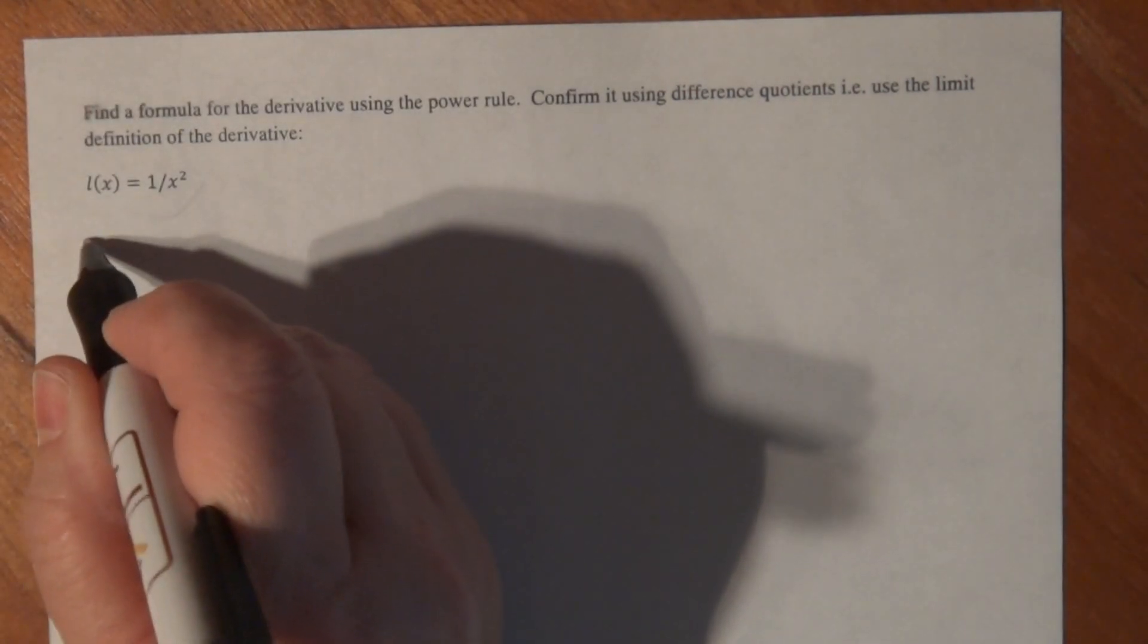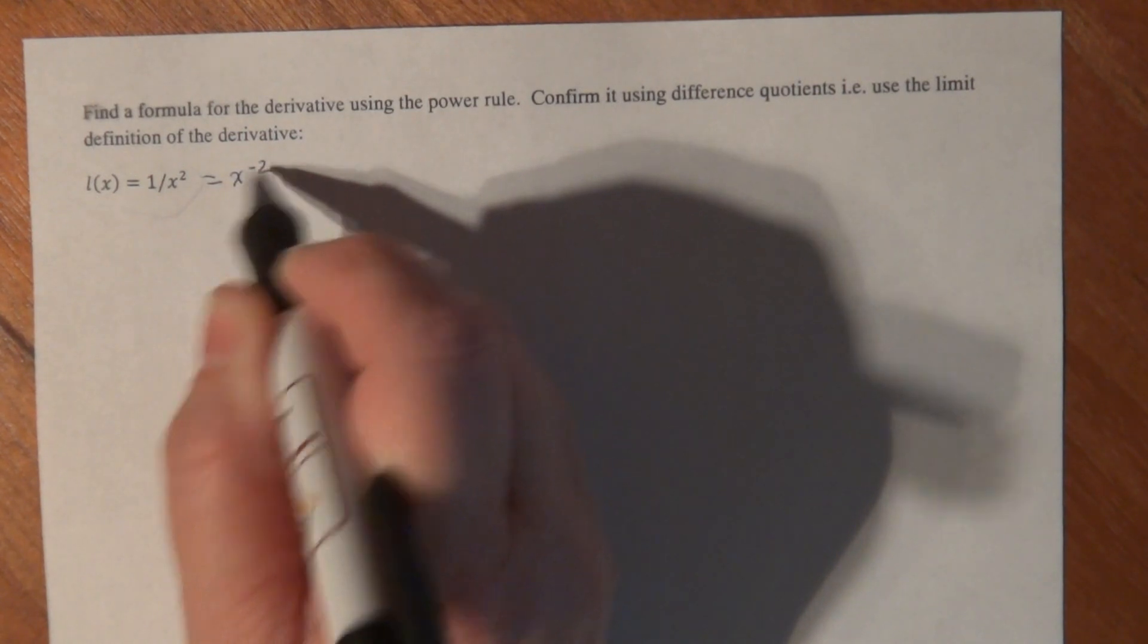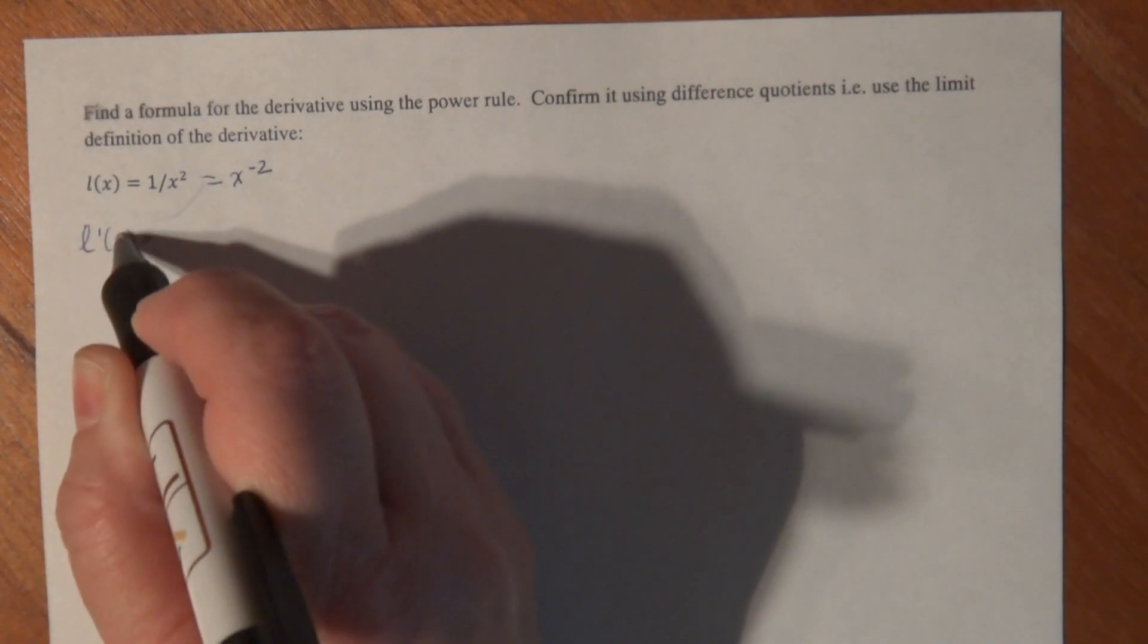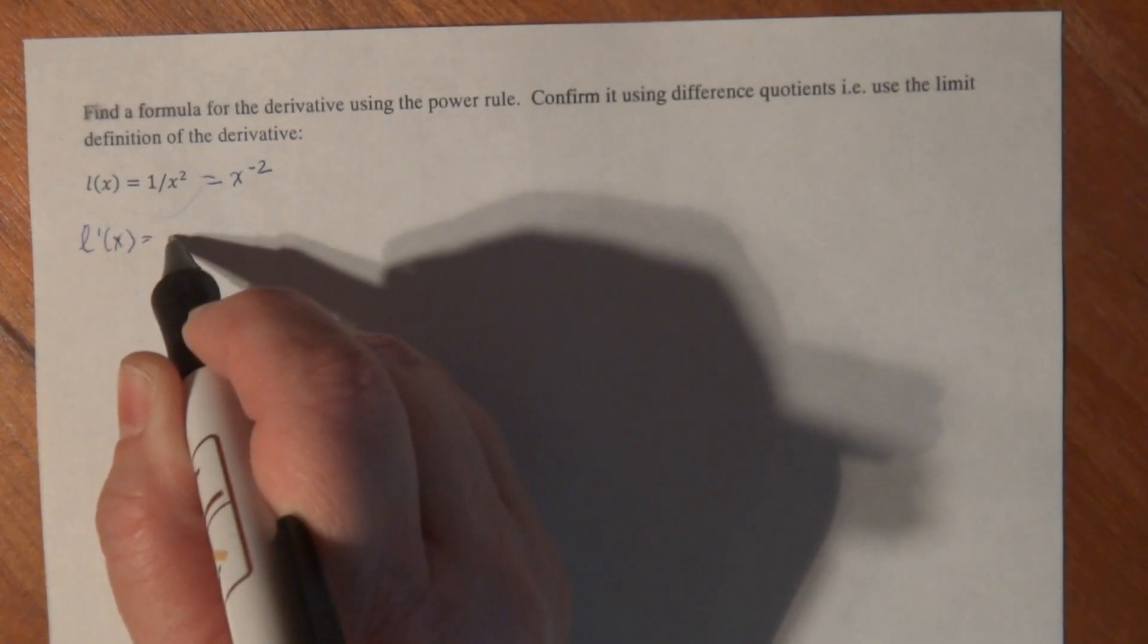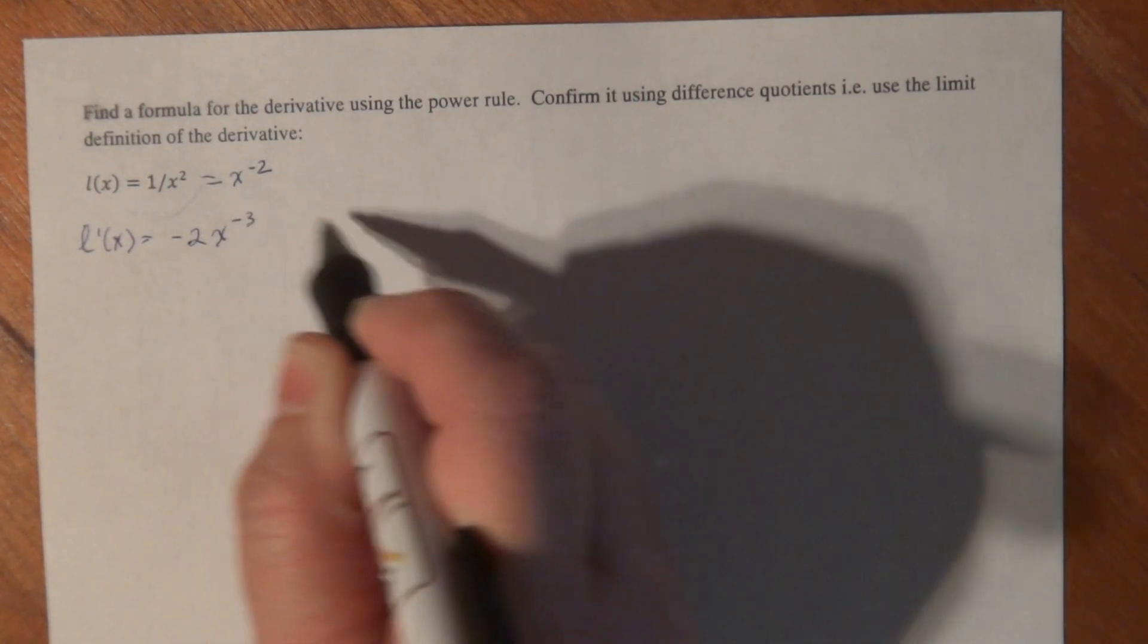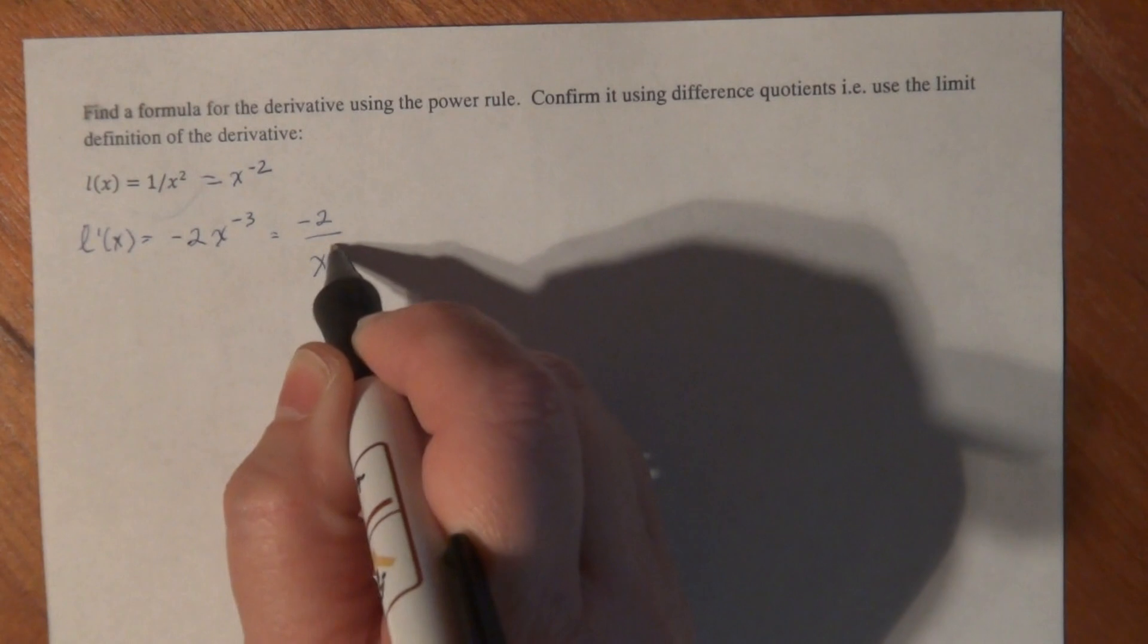All right, the first thing I'm going to do is rewrite L as a power function, x to the minus 2. And then finding the derivative is really easy. The power rule says I bring down the power as a coefficient, and I subtract 1 from the power itself, and then I can simplify it minus 2 over x to the third.